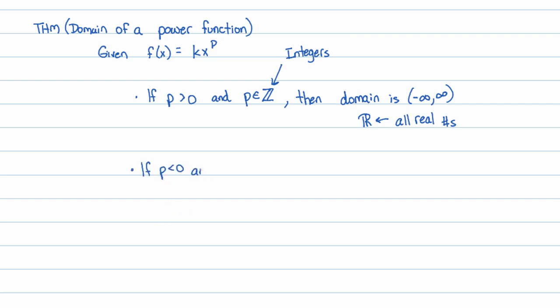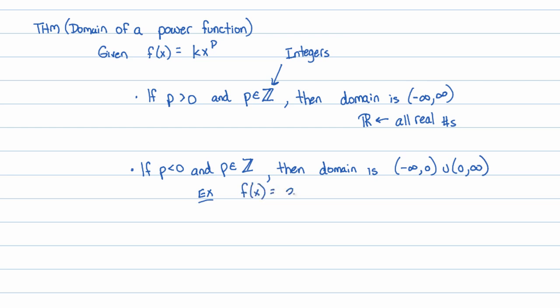If p is less than 0 and p is still an integer — so p could be negative 1, negative 2, negative 3, negative 4 — then the domain is all reals not including 0. The reason is that, for example, 3x^(-7) is the same as 3 over x^7. You can't plug in 0 because you'd be dividing by 0. That's why the domain is restricted when the power is negative. Negative exponents mean you're dividing by a variable.